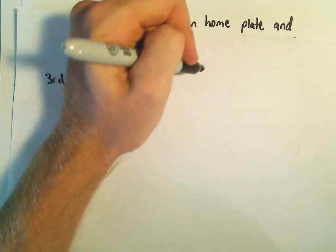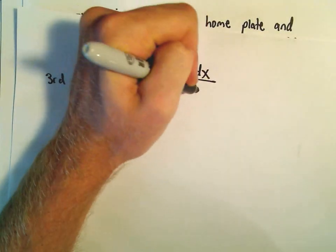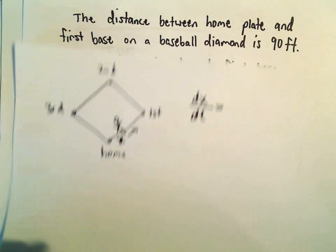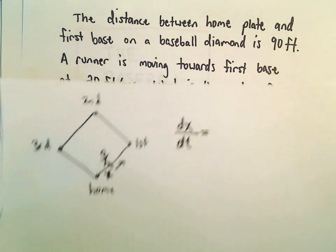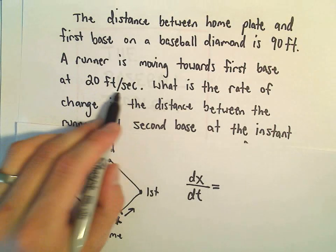We know his rate of change, dx/dt. So dx/dt is going to equal 20 feet per second.